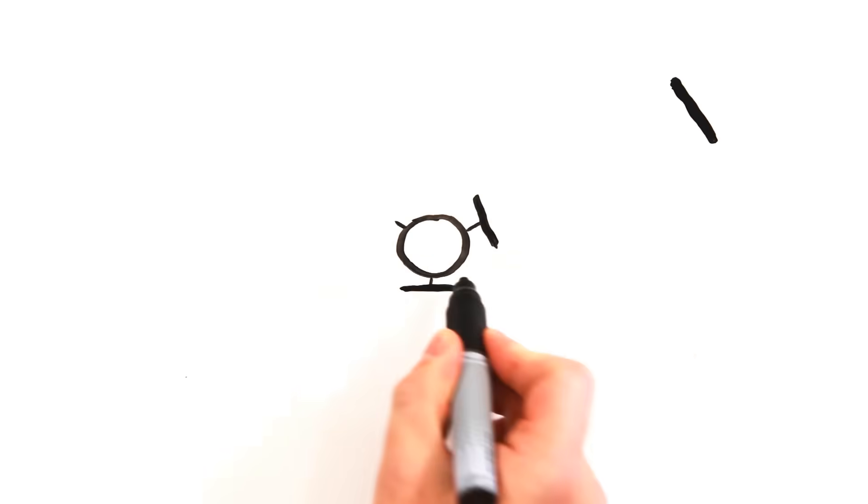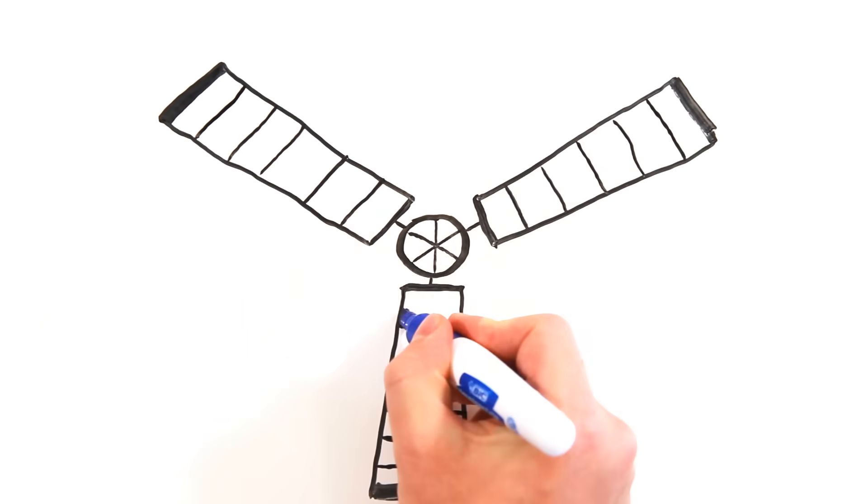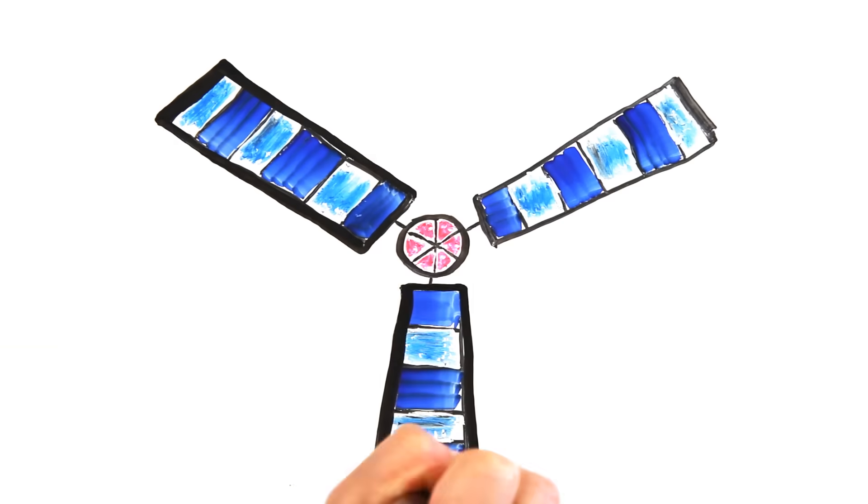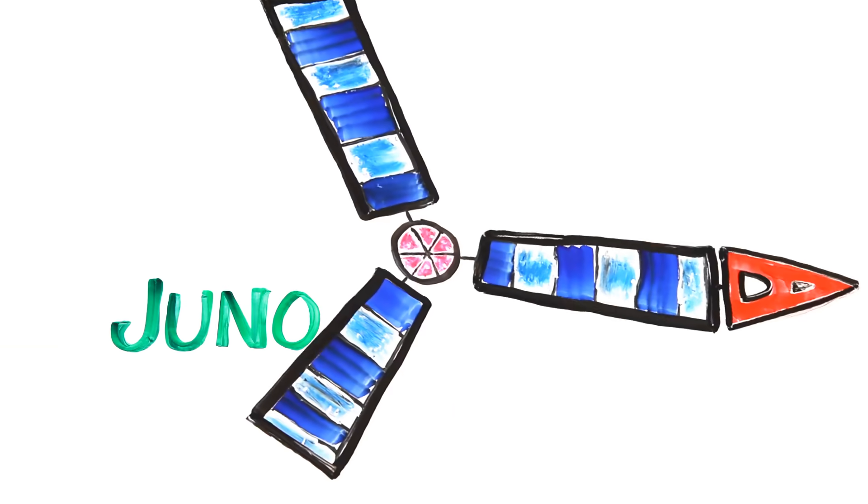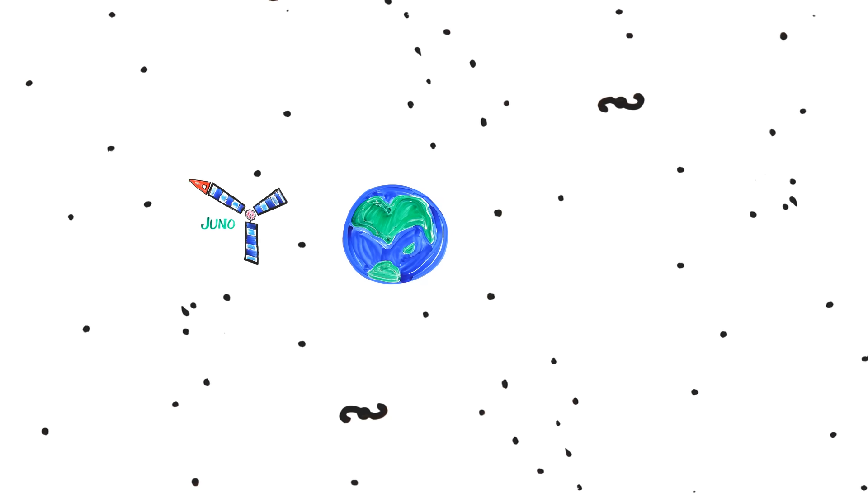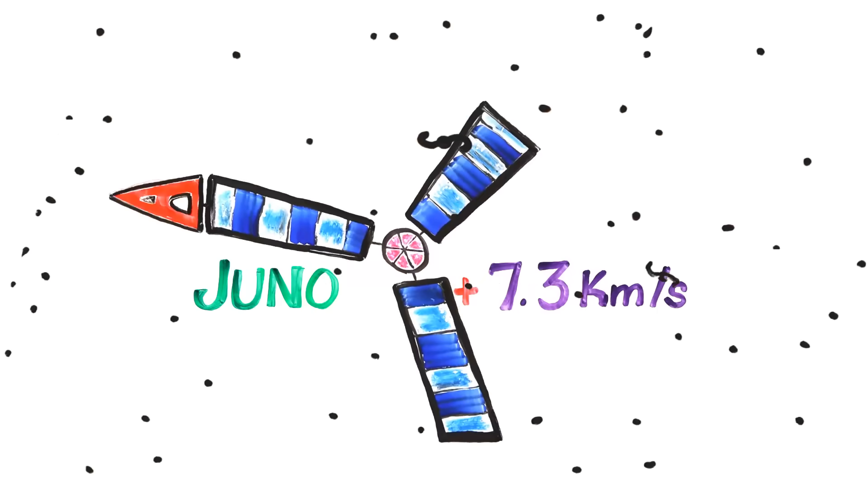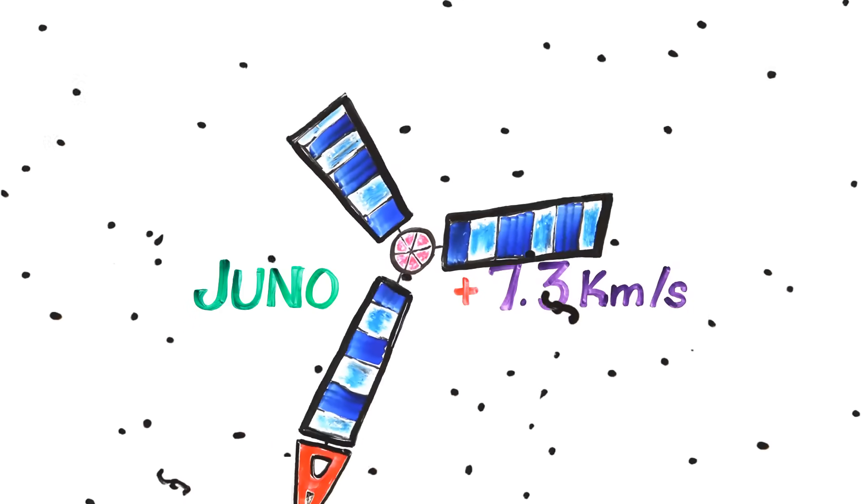It may seem far-fetched, but it's already happening. On October 9th, 2013, Earth will be used to gravity assist a spacecraft called Juno, which is on its way to Jupiter. As Juno flies within 559 kilometers of us, it will use Earth's gravity as a slingshot to boost its velocity by 7.3 kilometers per second. Meanwhile, Earth will have been moved by a fraction.